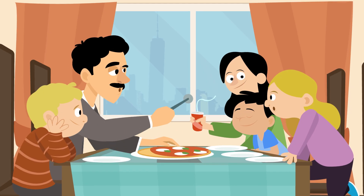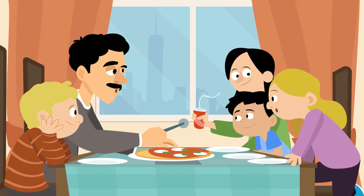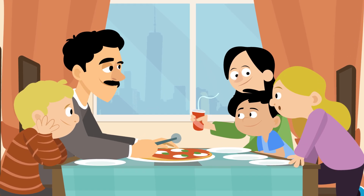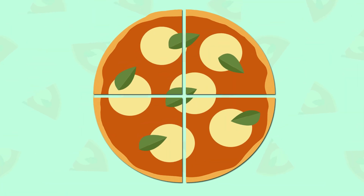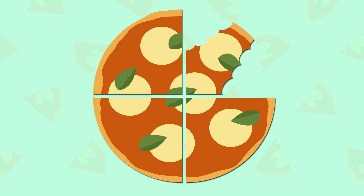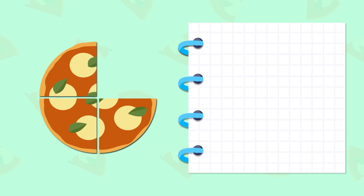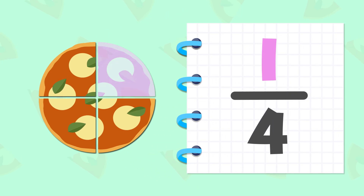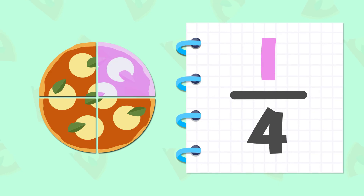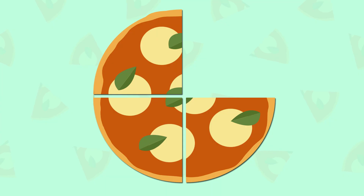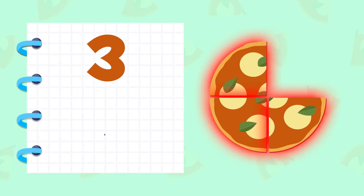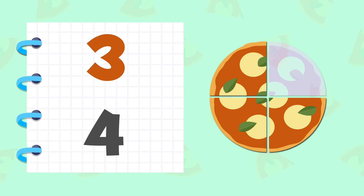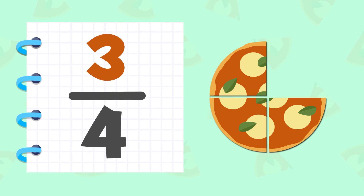Did you know that if we divide an object into two equal parts, we would also have fractions? This pizza, for example. If we divided it in four equal parts and ate one of them, we would have eaten one-fourth of the pizza. The rest stays in the box. What fraction would that be? Well, if there are three alike pieces left in the box and there were four pieces before, there are three-fourths of pizza left.